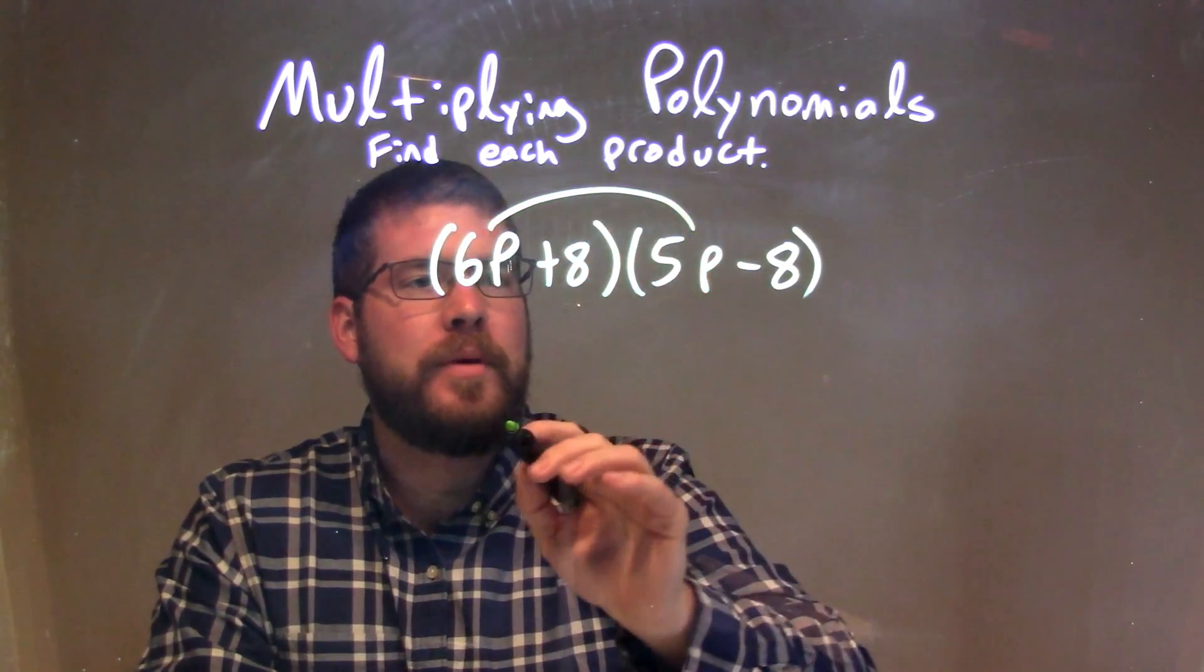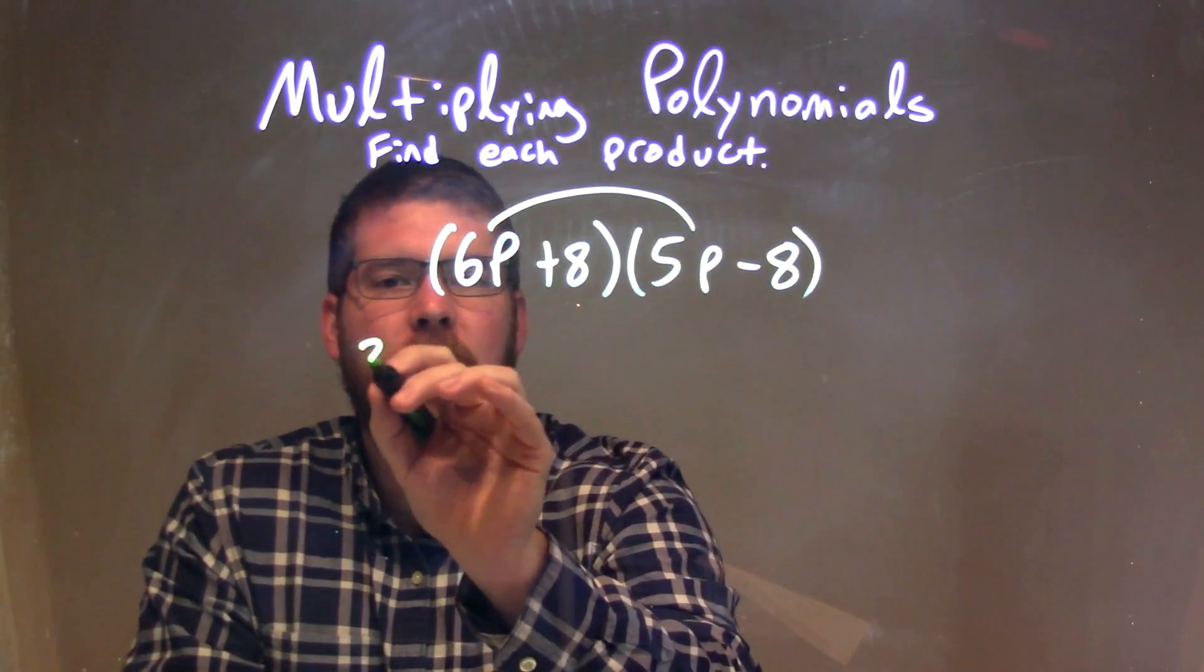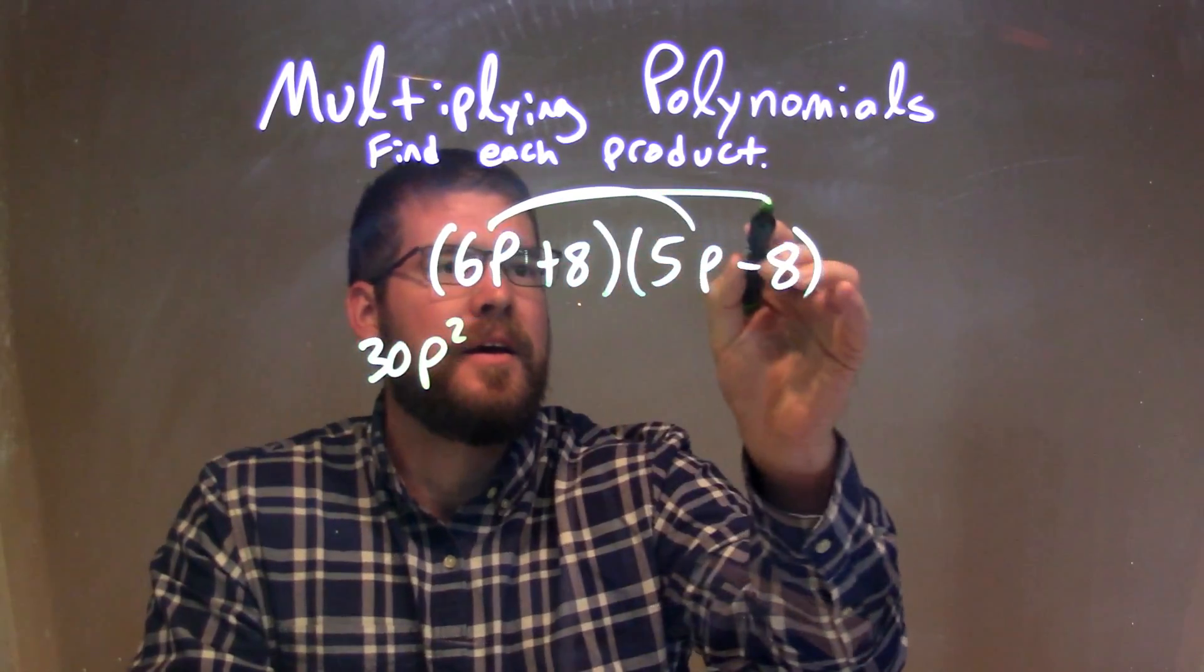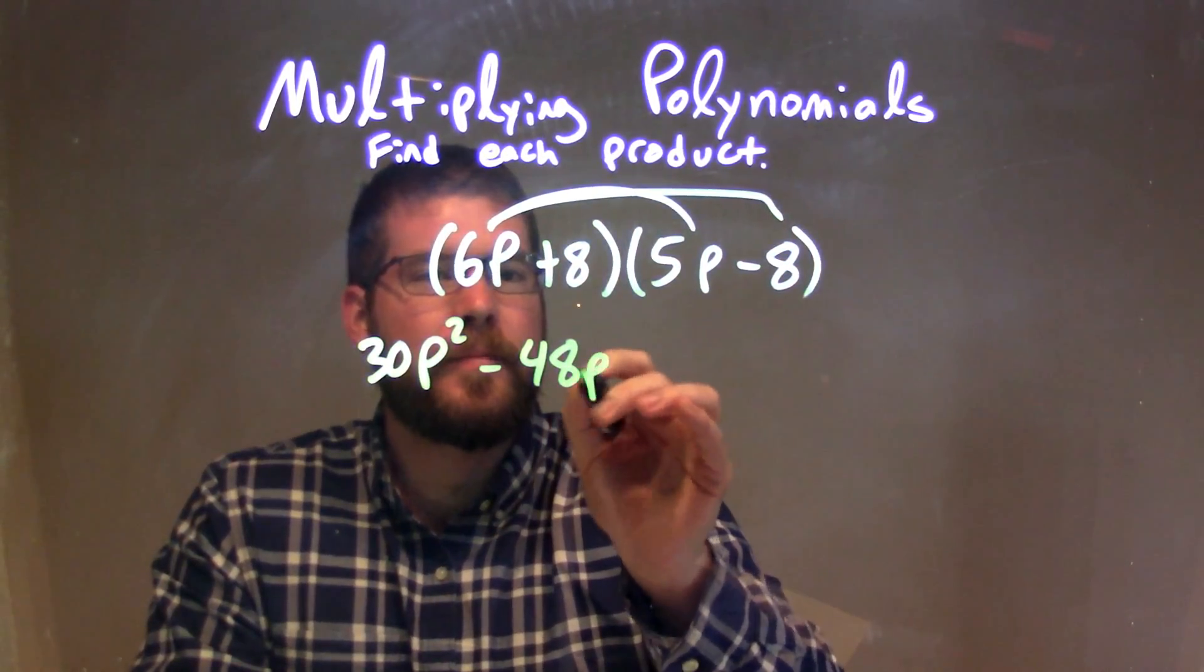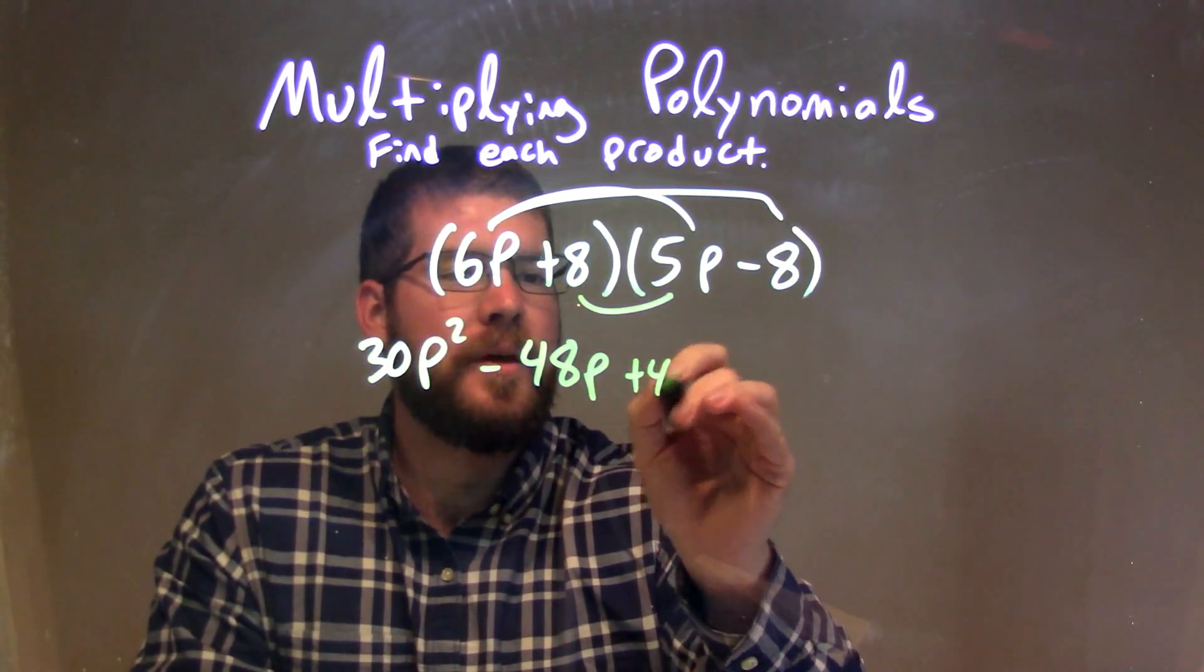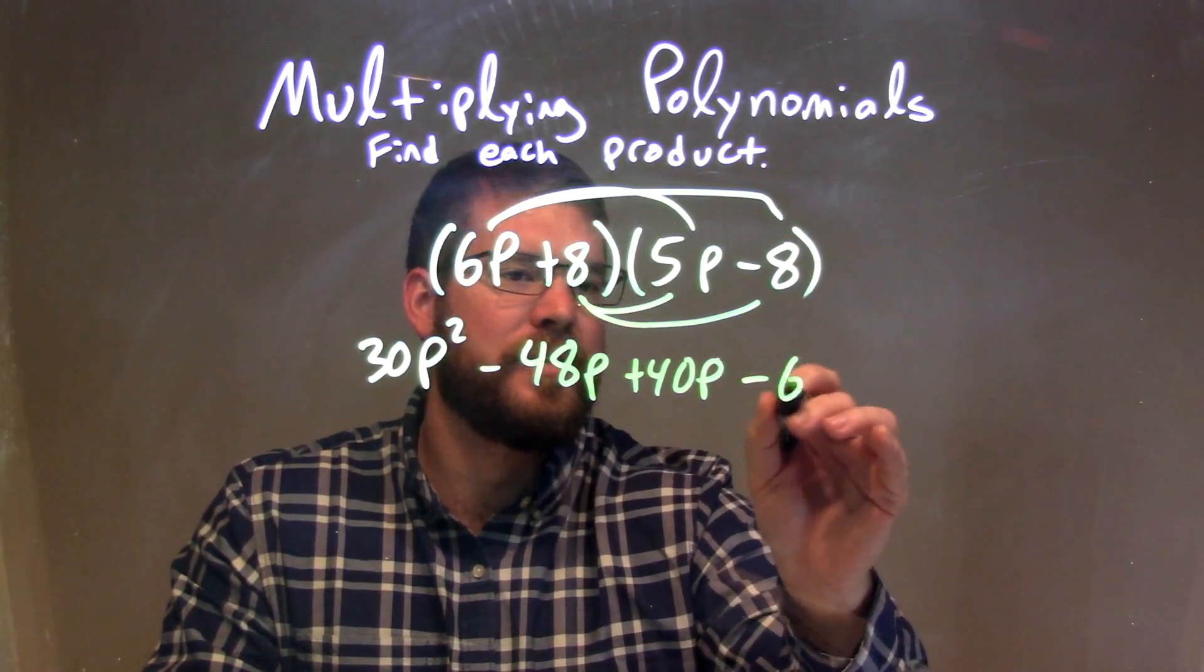6p times 5p—let's draw our arcs to show that we've made that connection—6p times 5p is 30p squared, 6p times minus 8 is minus 48p, 8 times 5p is 40p, and 8 times minus 8 is minus 64.